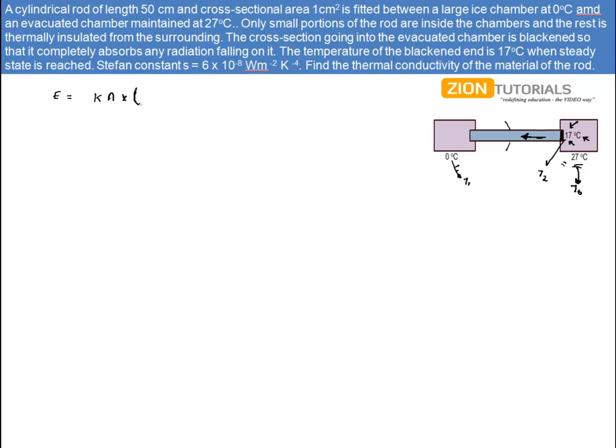So I have K times A times (T₁ - T₂) divided by length, and this energy is coming from the radiation falling on the blackened end.